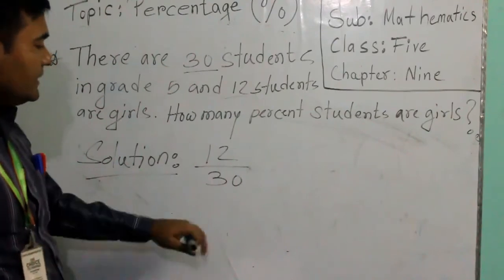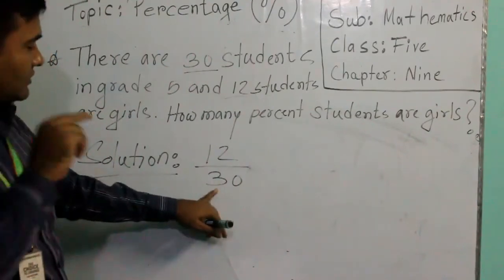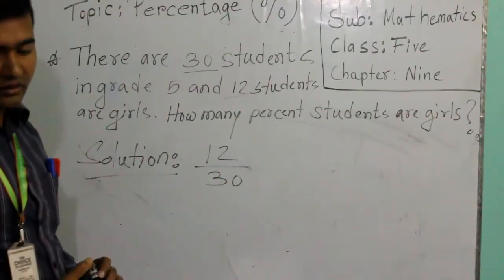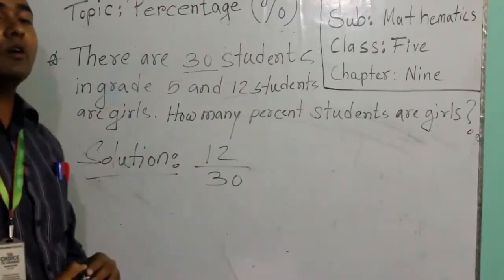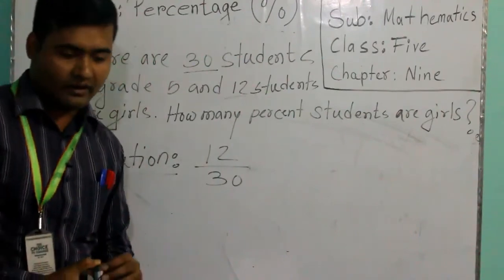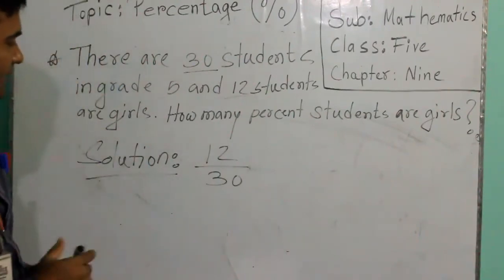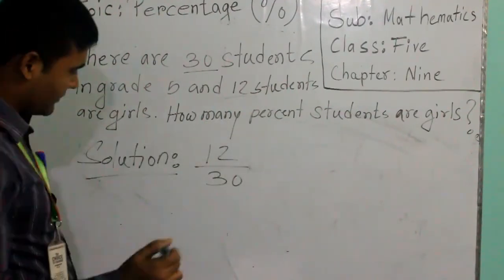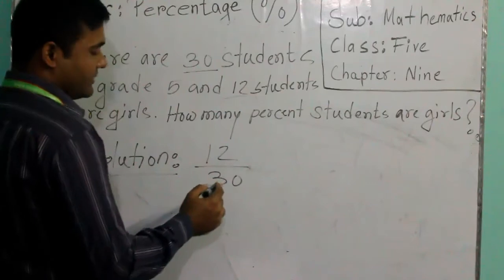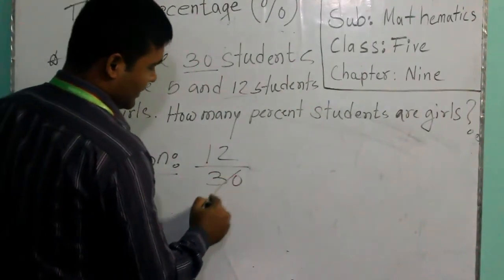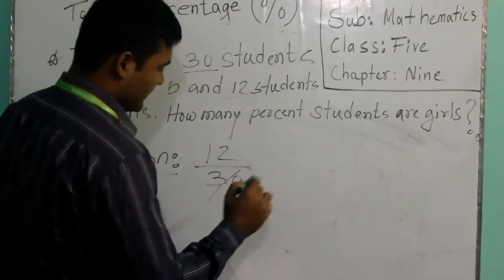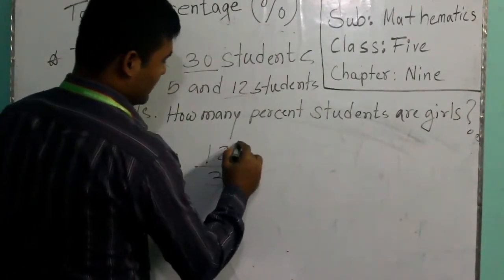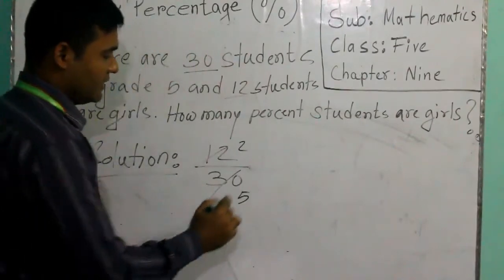What we need to do? We need, as last time I was talking about, we need to make this 100. This is 30. How come we will make this one 100? There is a very easy technique. We can do division here. If we use the common number, 6 and 5 is 30.